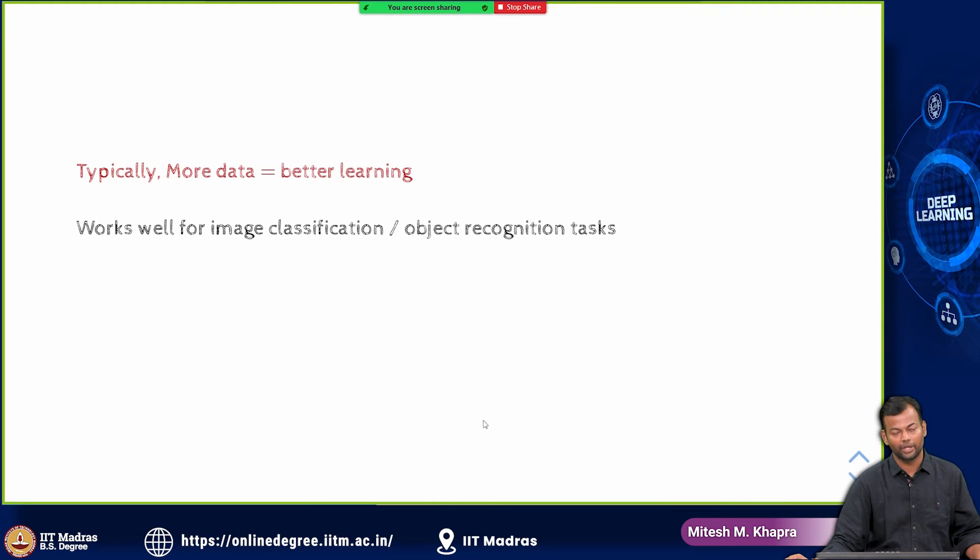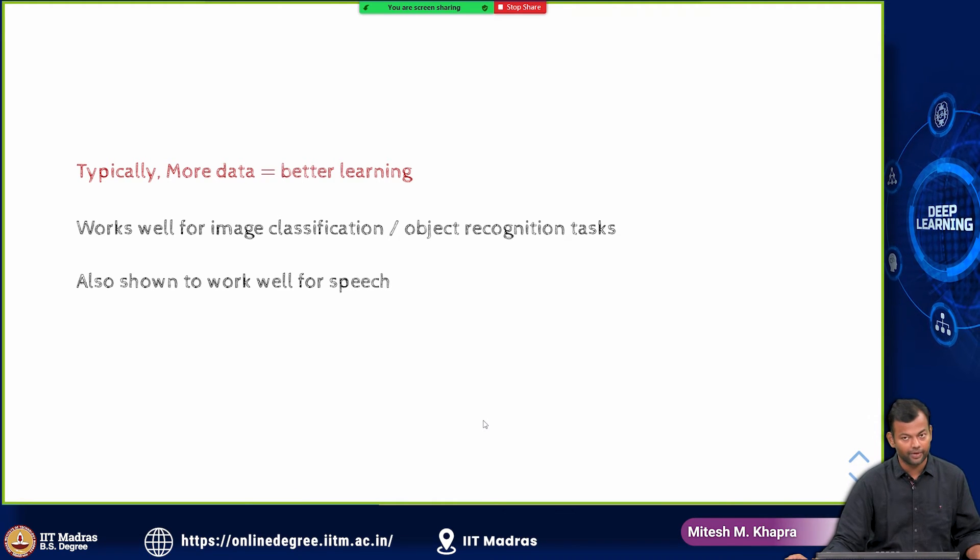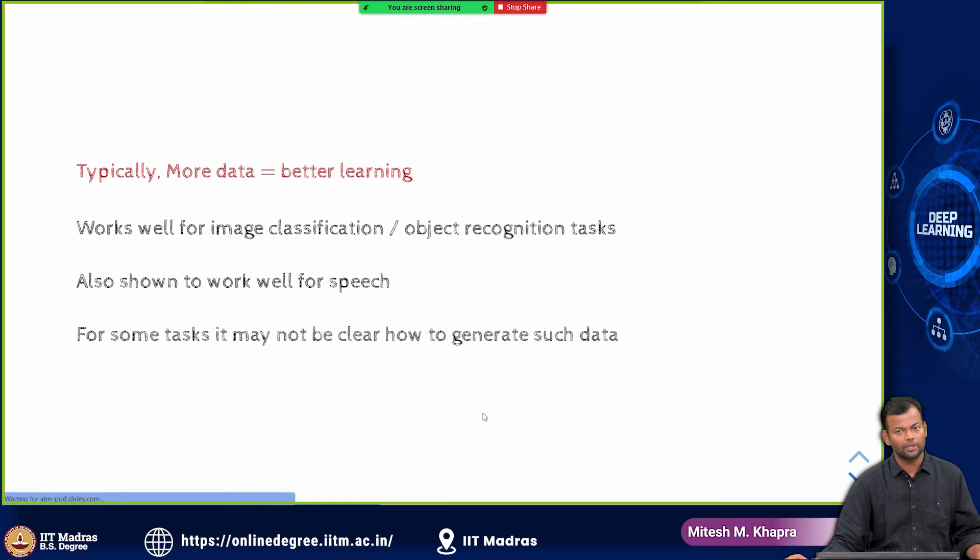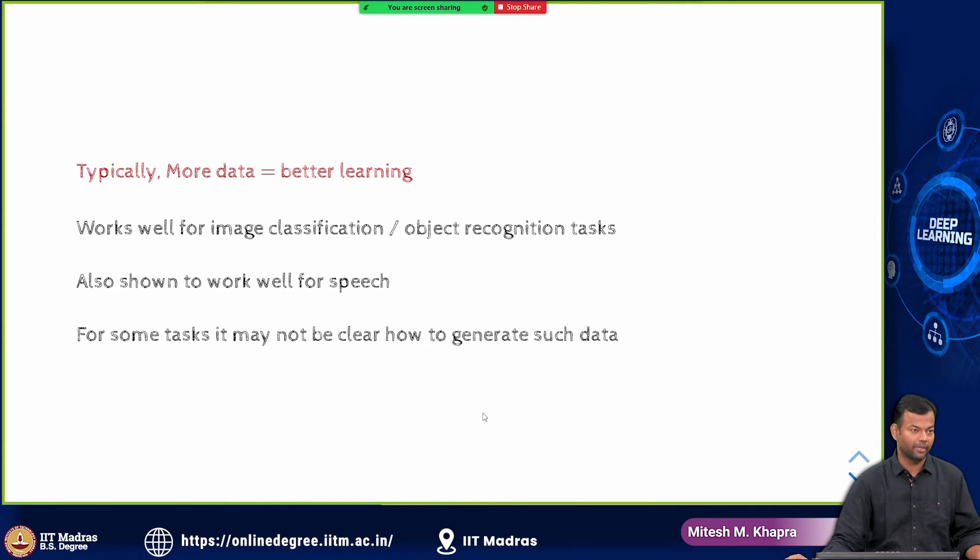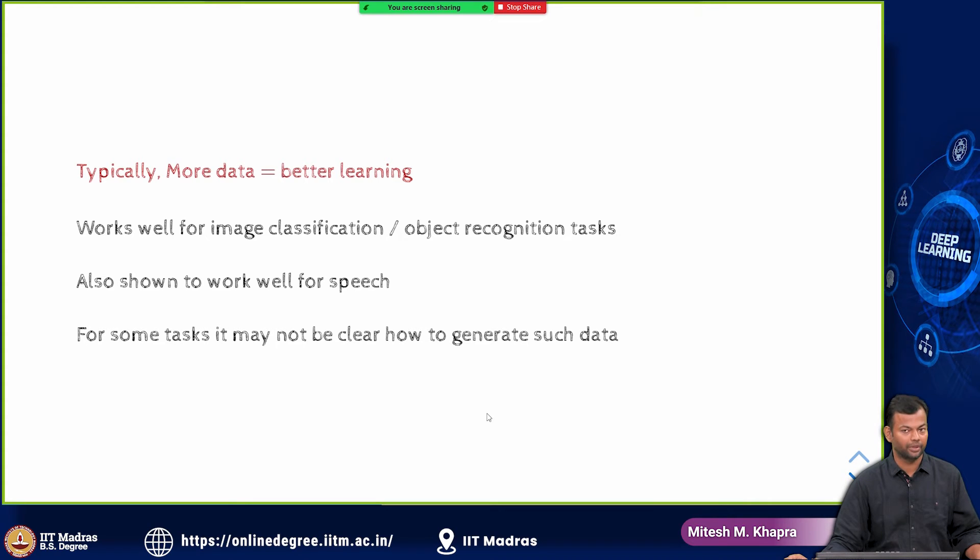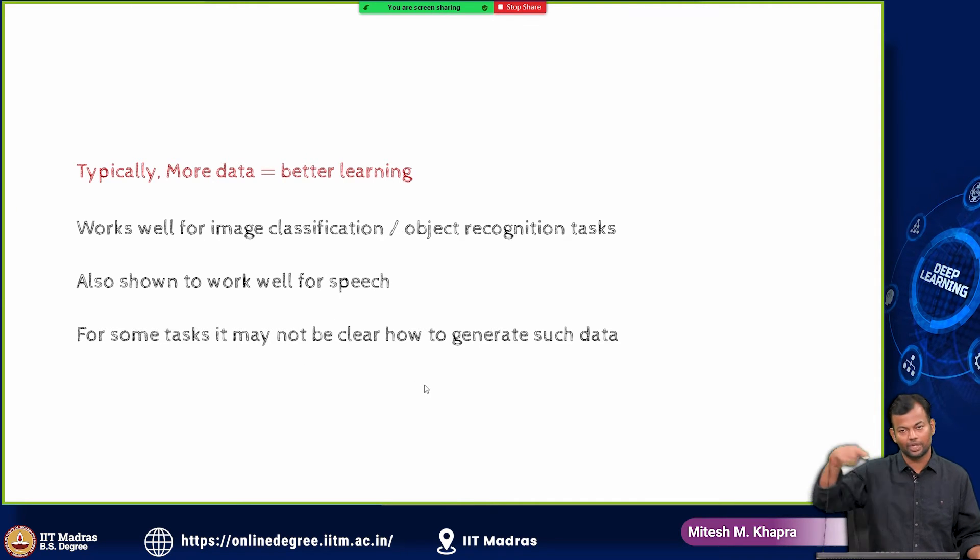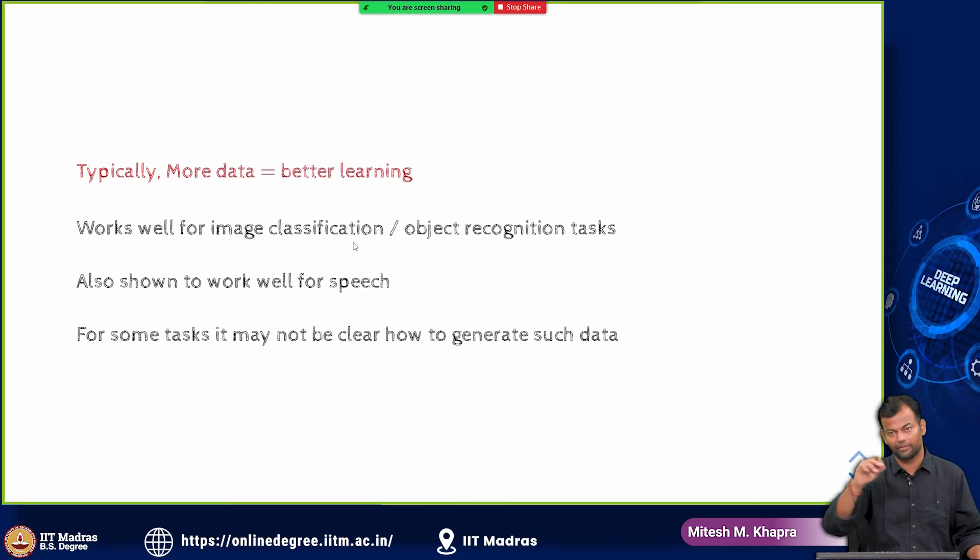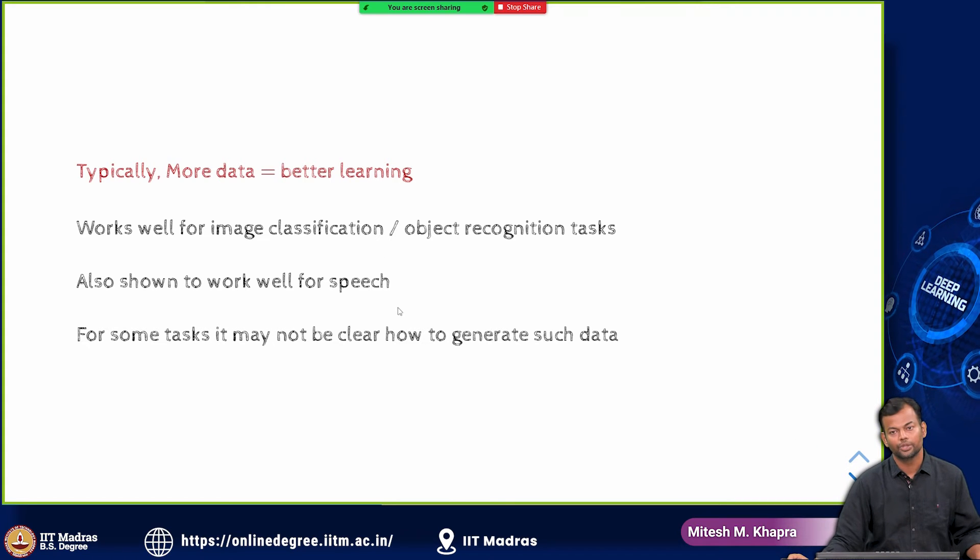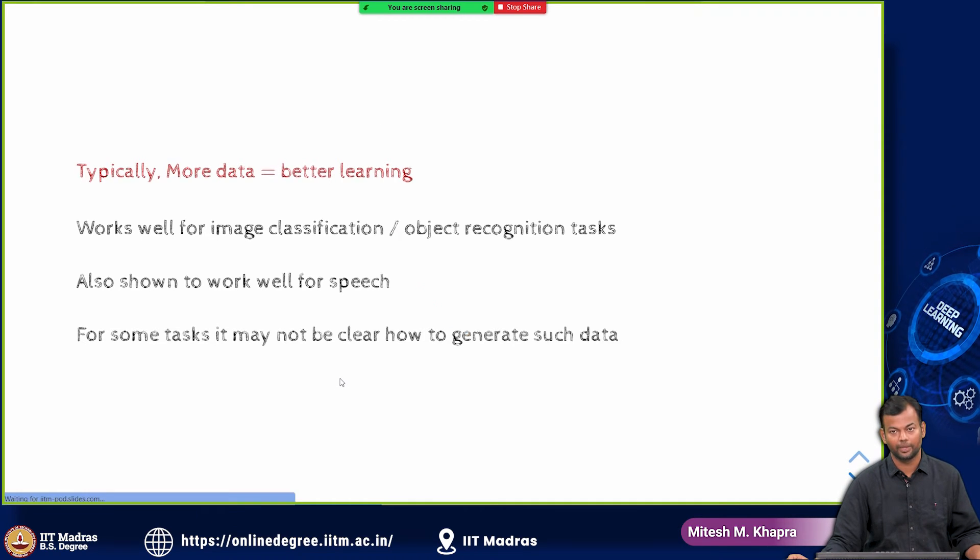And this works well for image classification, object recognition, it has also been tried well for speech. Now, it has also been tried for text, there are libraries which allow you to do data augmentations, but in text it is still a bit harder to come up with very meaningful augmentations. The main difference is in image and speech you have continuous signals, whereas in text you have discrete, you have just words. So that is the main difference, but even for text nowadays there are certain augmentation techniques available. So that is all to be said about data set augmentation.